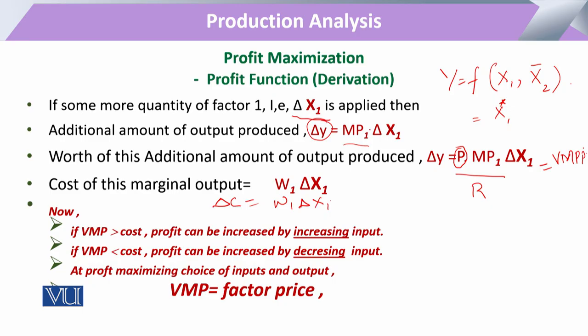So now if this VMP is greater than the marginal cost, we can say that profit can be increased by increasing the input amount for further output production. And if VMP is less than marginal cost, profit is increased by reducing the potential loss — meaning we reduce further input rather than add more. So the profit maximizing choice of input and output means that the critical point is where VMP, the value of marginal physical product, is equal to the factor price.